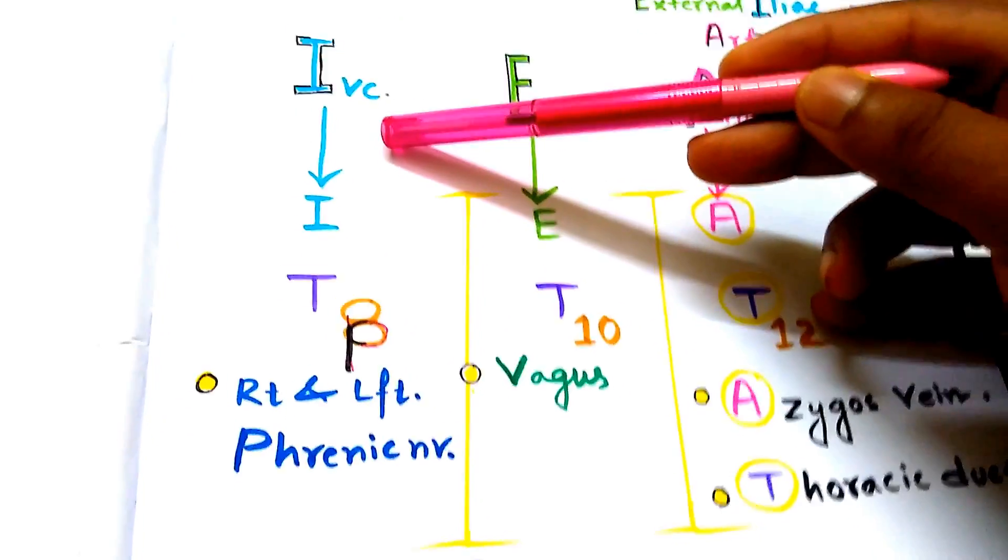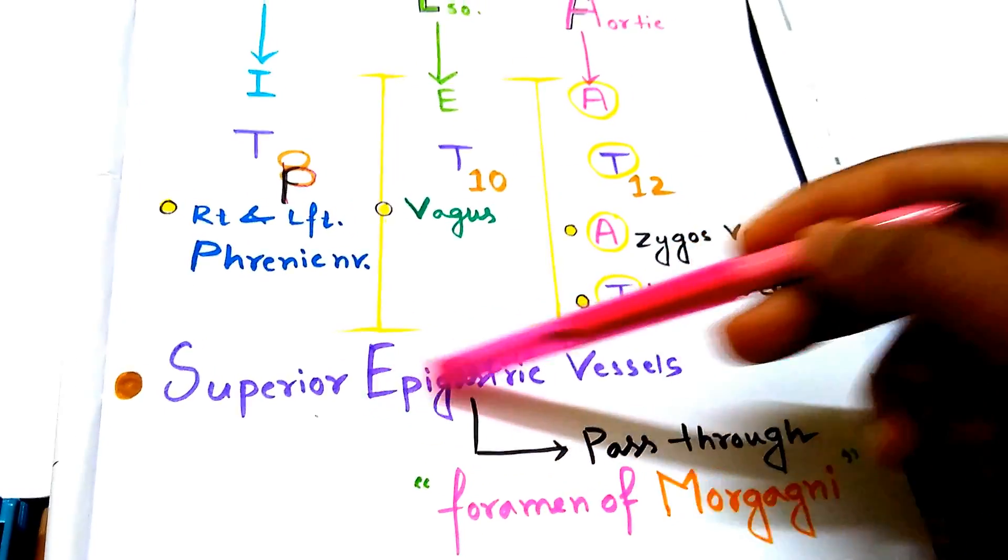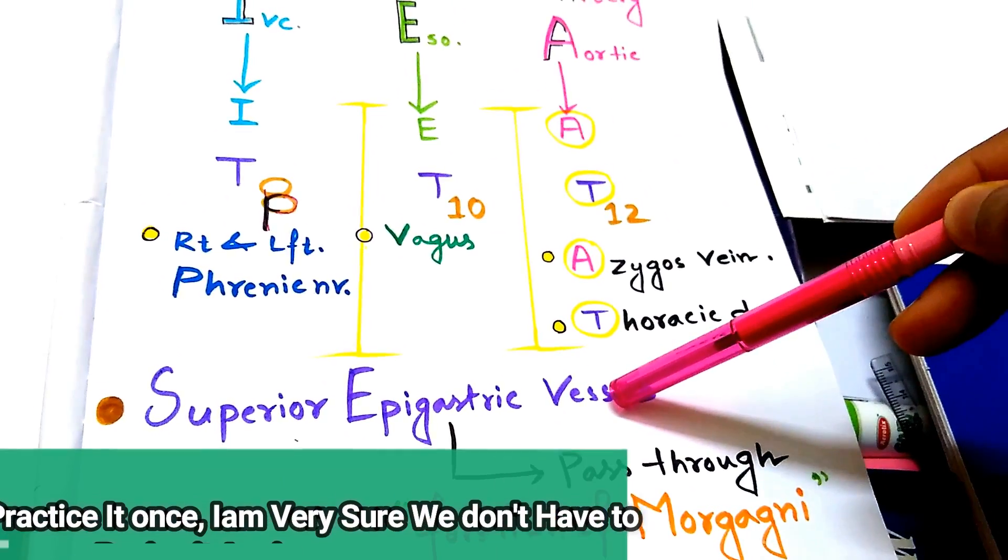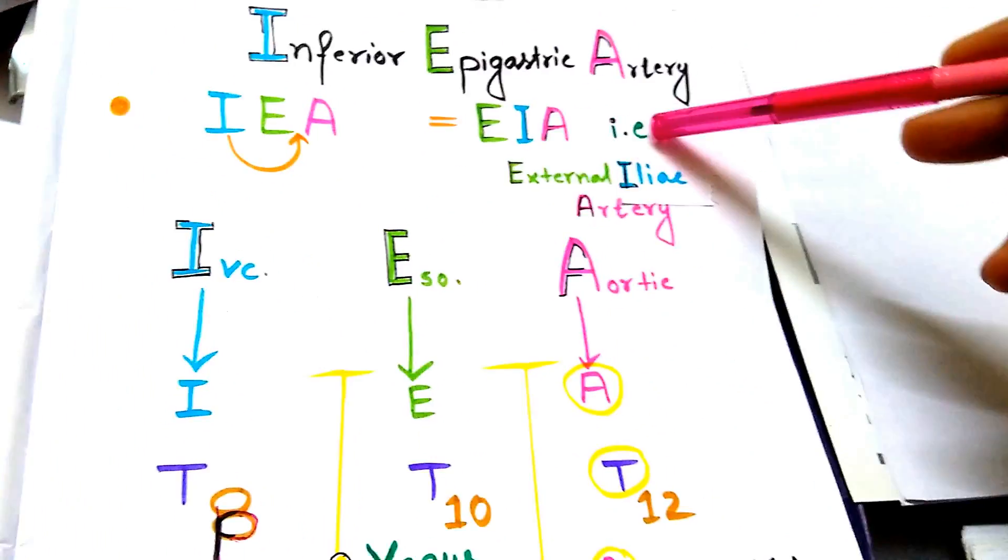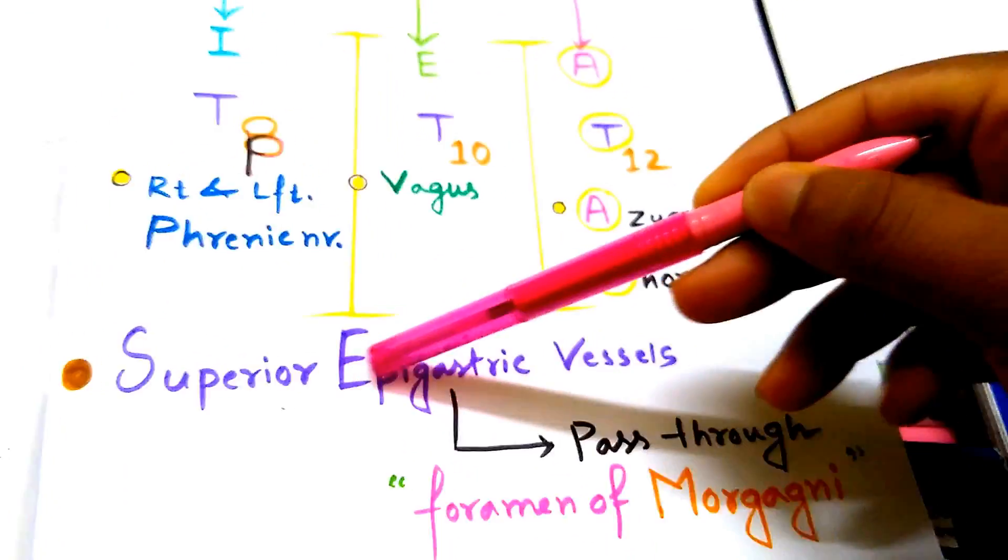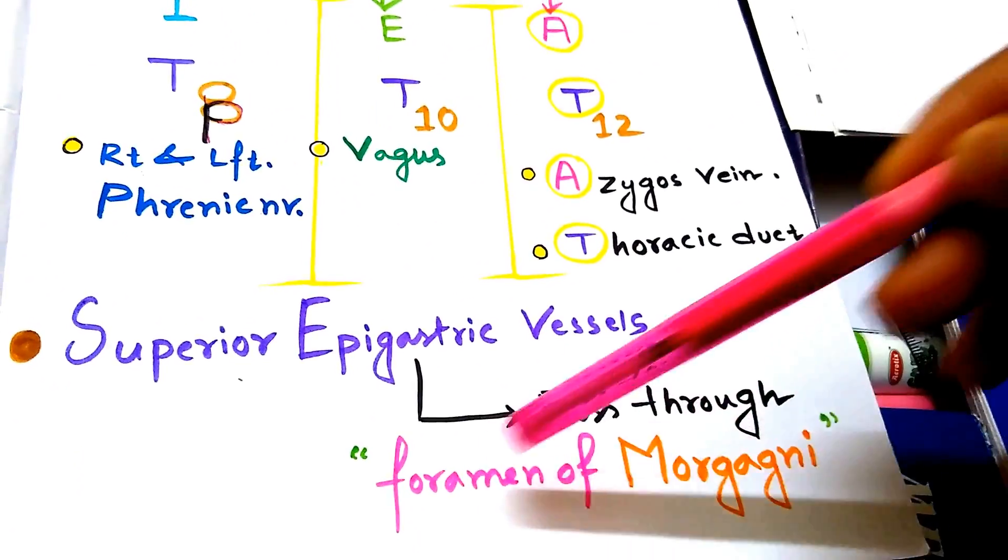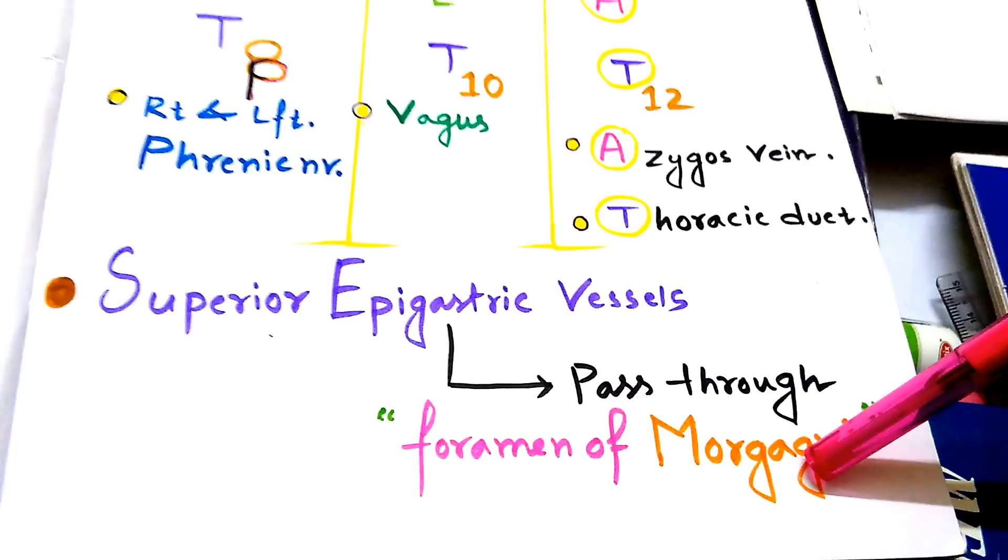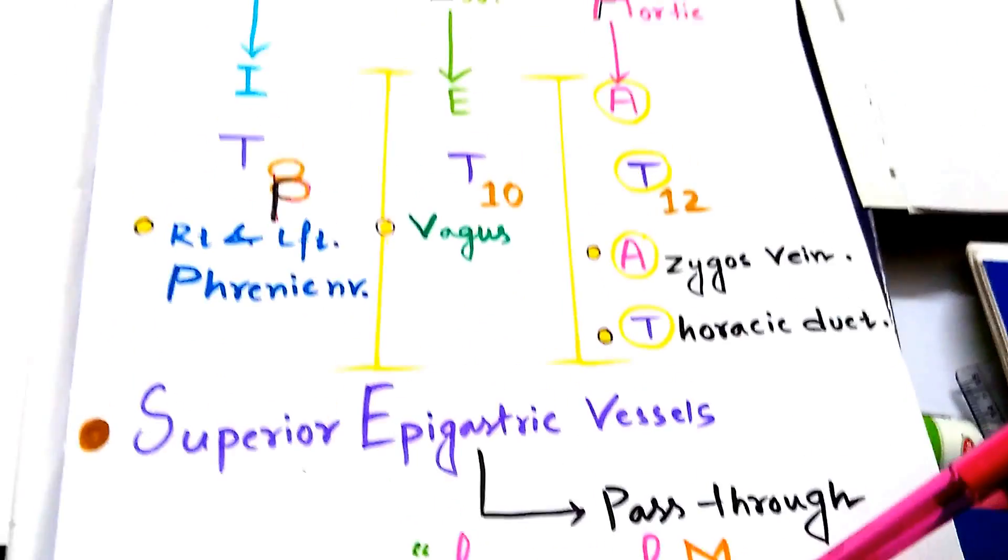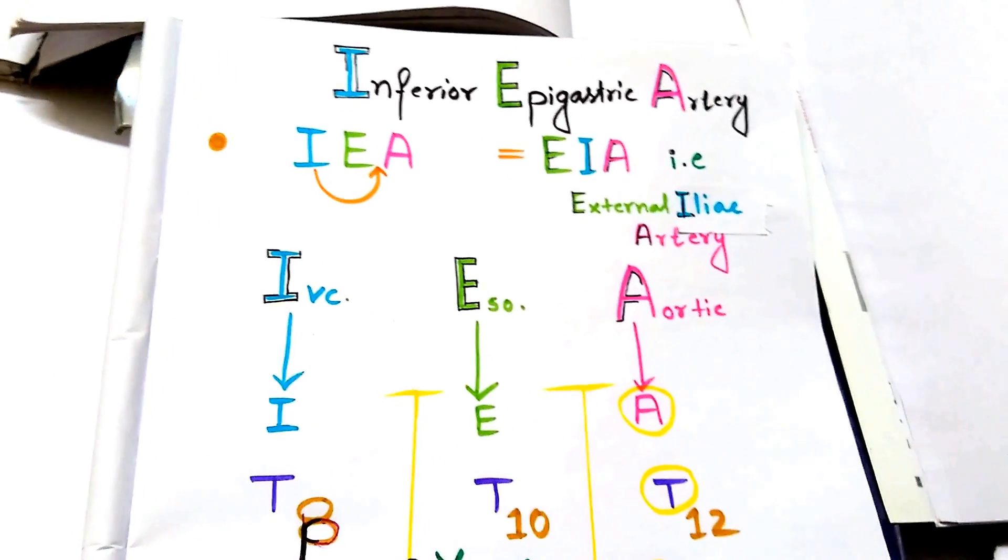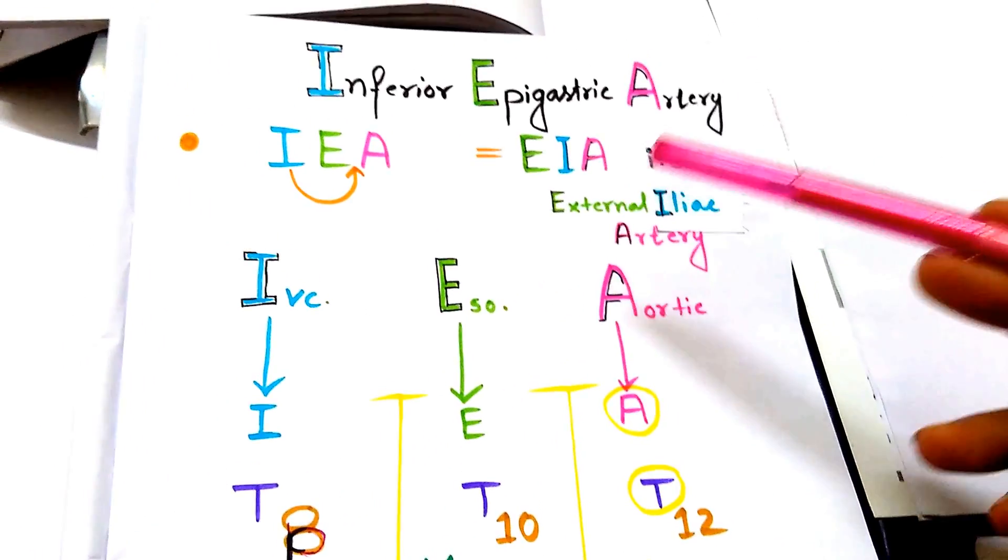Now it is about superior epigastric vessels. It will be unfair if we don't think about superior epigastric artery because we have already discussed about inferior epigastric artery. The superior epigastric vessels pass through the foramen of Morgagni which is a small opening in the diaphragm. Now it is balanced because we have discussed about both inferior epigastric artery and superior epigastric vessels.